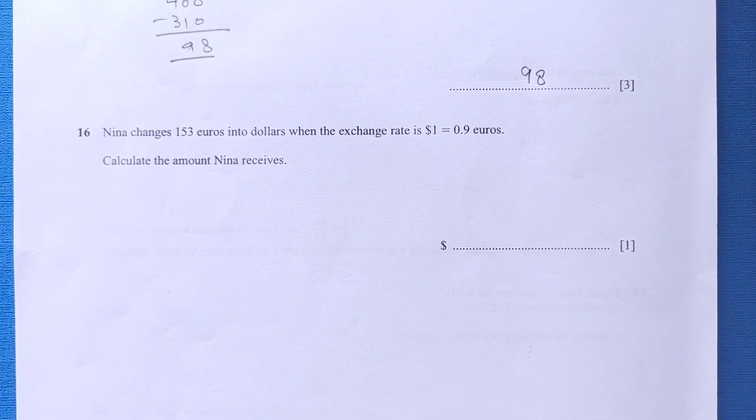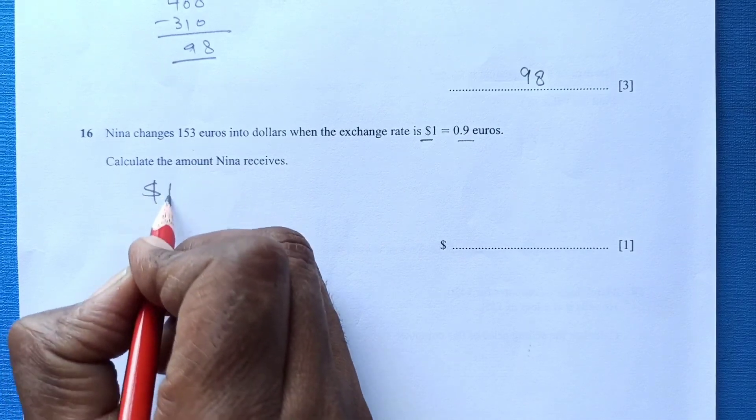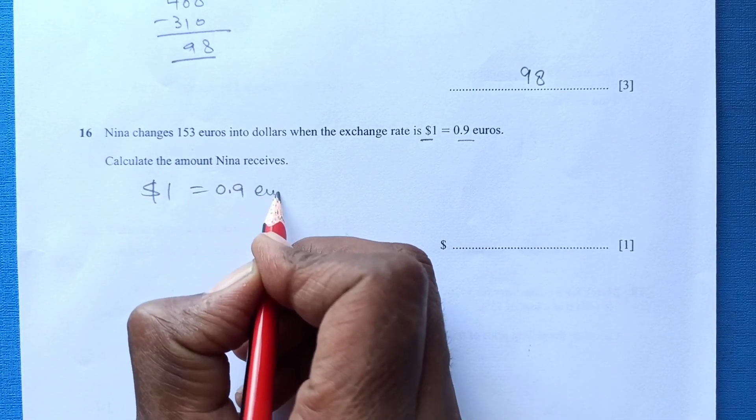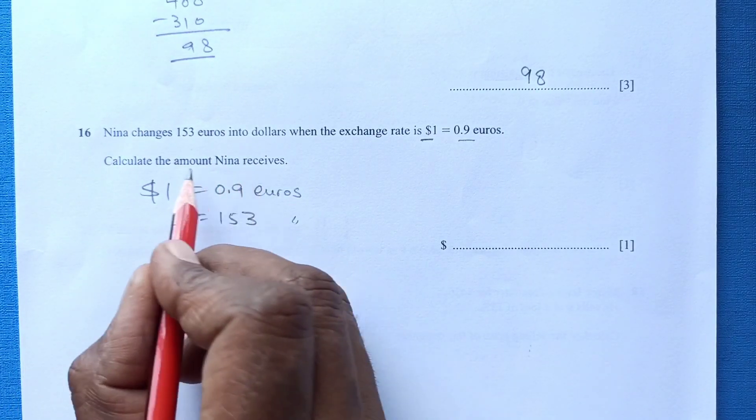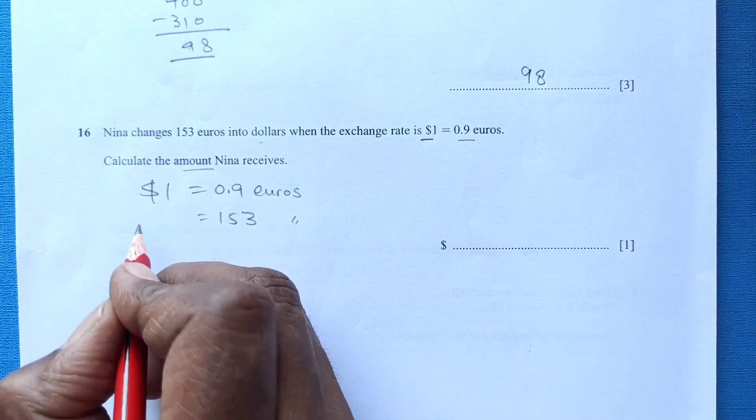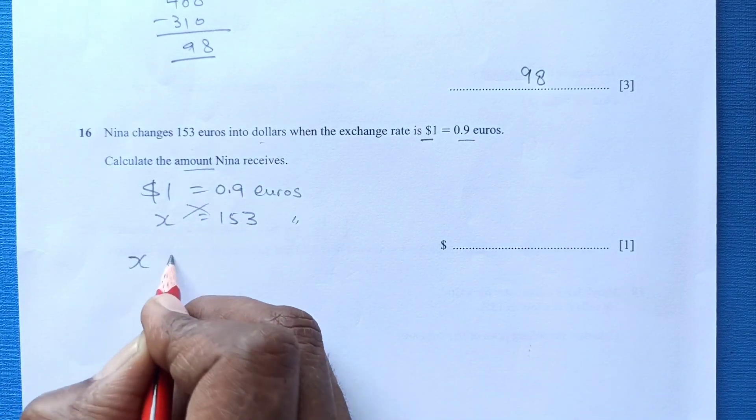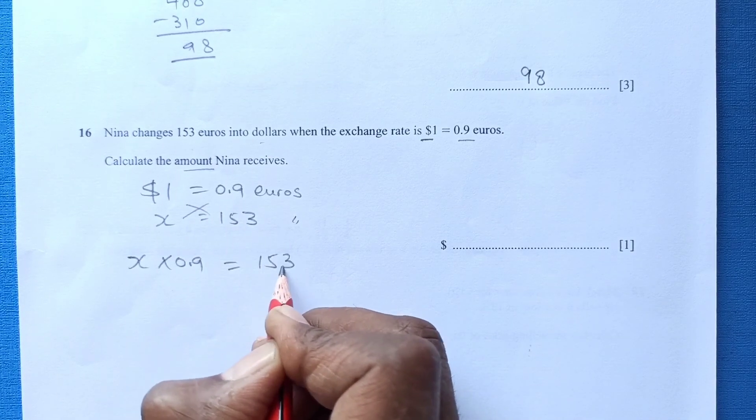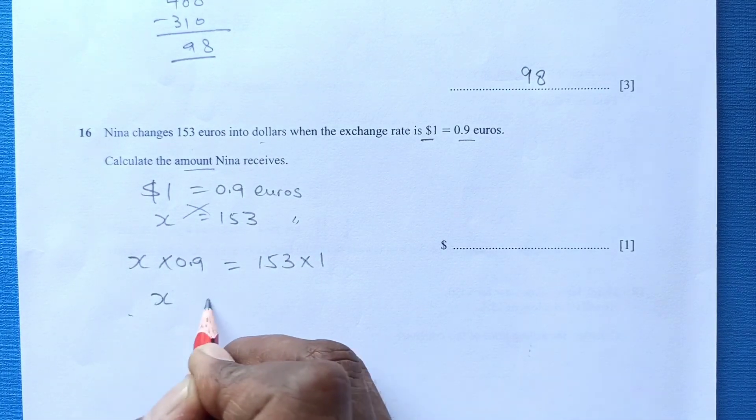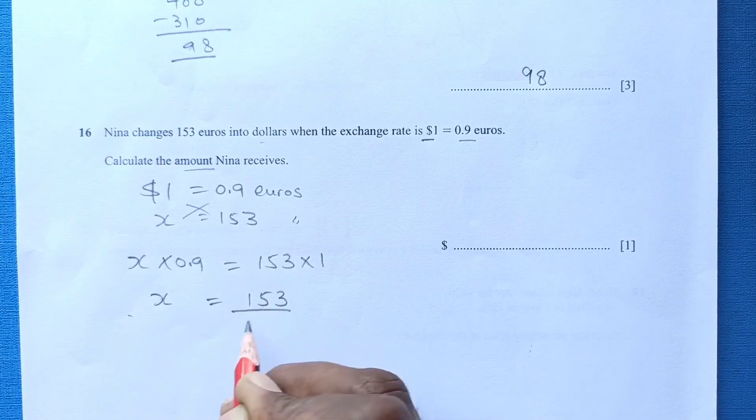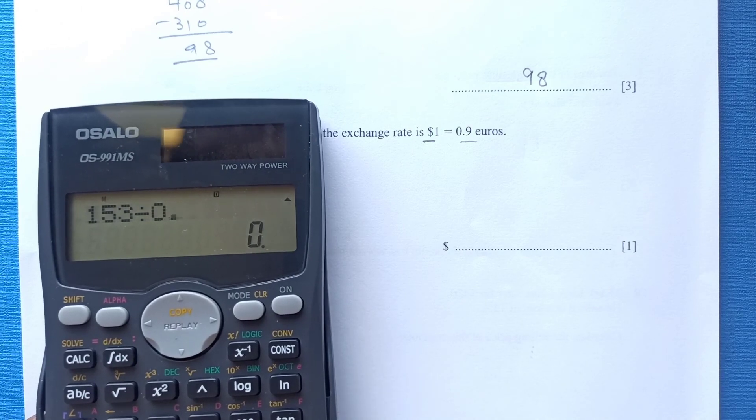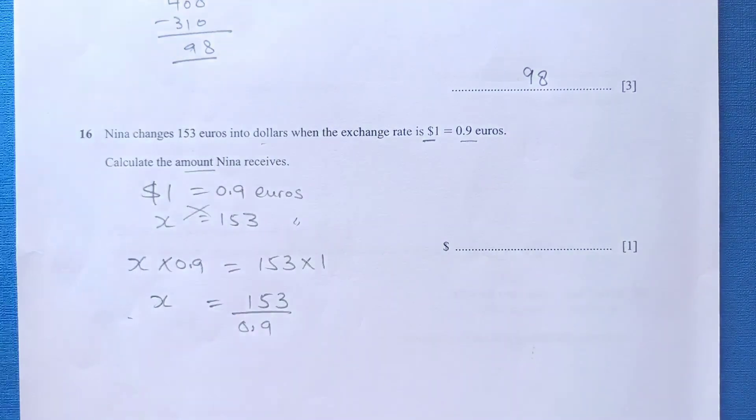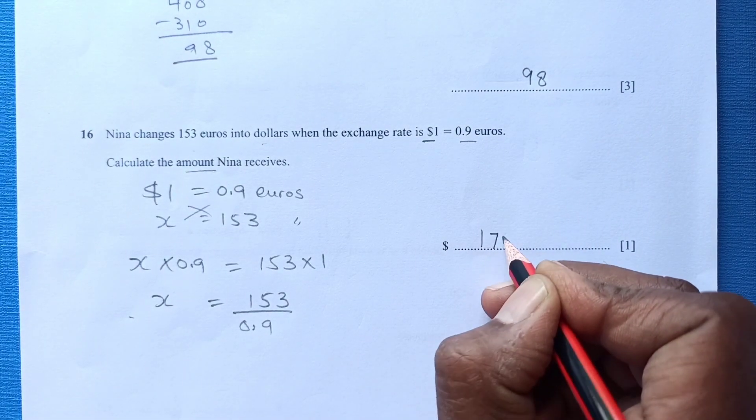Number 16: Nina changes 153 euros into dollars when the exchange rate is dollar 1 to 0.9 euros. She wants to change 153 euros. Calculate how much amount in dollar she receives. Just cross multiply. X times 0.9, 153 times 1. It will be 153 over 0.9. 153 divided by 0.9, it is 170. Answer will be 170 dollars.